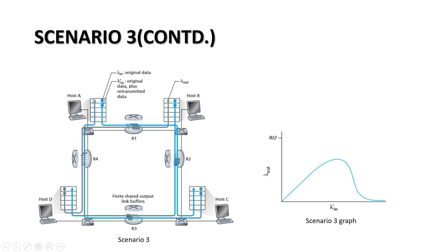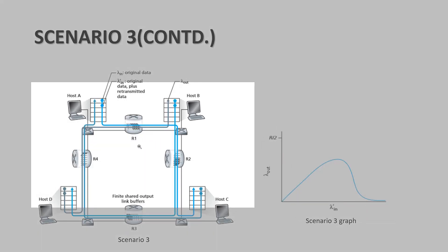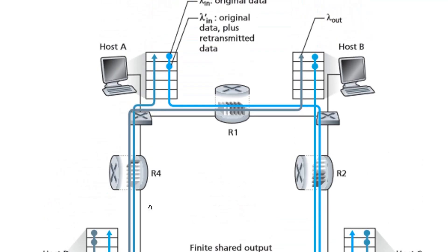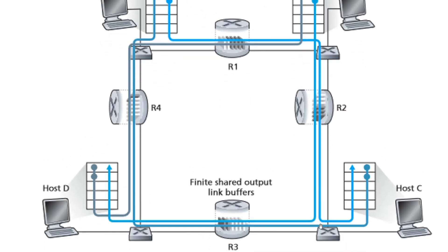Host A is sending data to host C via R1 and R2, and C is sending back data via R3 and R4 to host A. These are multi-hop paths. Similarly, B is sending data to D, and D is sending data via R4 to R1 to host B. Let us discuss the connection between host C to host A and B to D. Host C is using R3 to reach host A, and host B is sending to host D via R3.